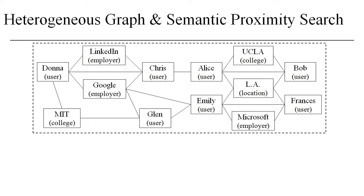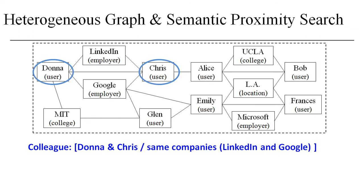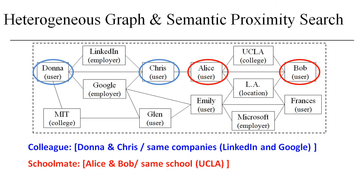For example, Donna and Chris work in the same companies, LinkedIn and Google, so they are colleagues. Whereas Alice and Bob attend the same school, UCLA, so they are schoolmates.